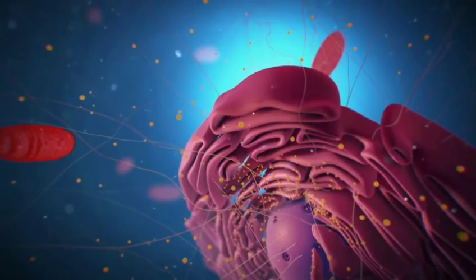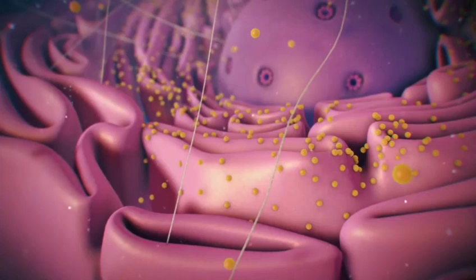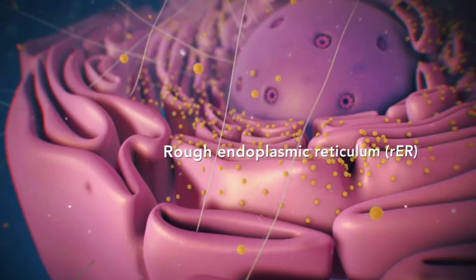Ribosomes may wander freely within the cytoplasm or attach to the endoplasmic reticulum, sometimes abbreviated as ER. There are two types of ER. Rough ER has ribosomes attached to it, and smooth ER doesn't have ribosomes attached to it.